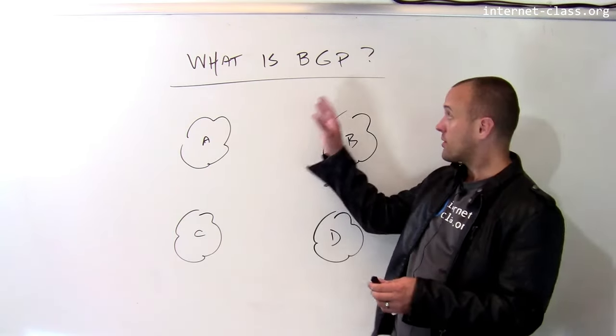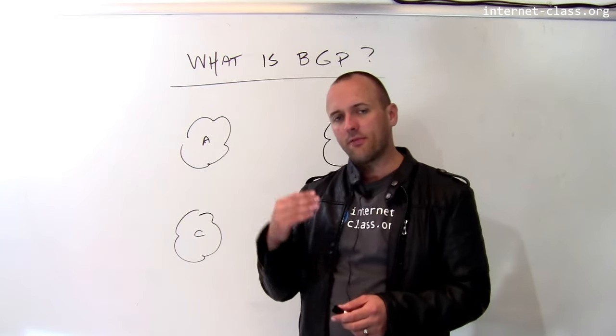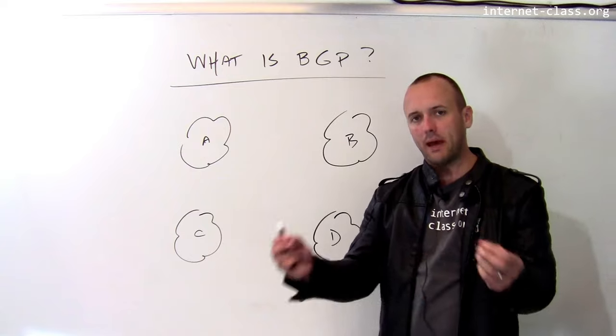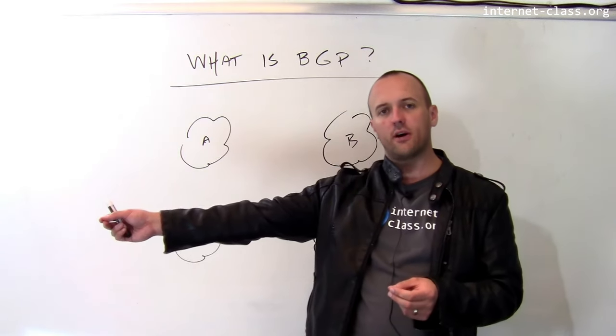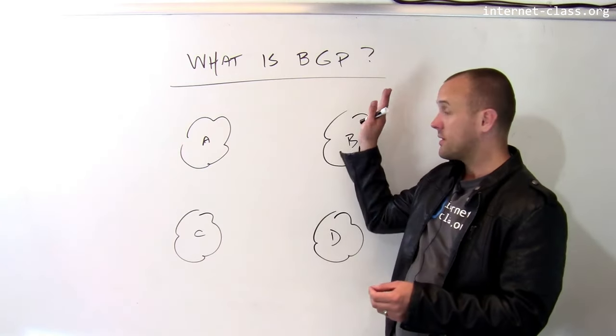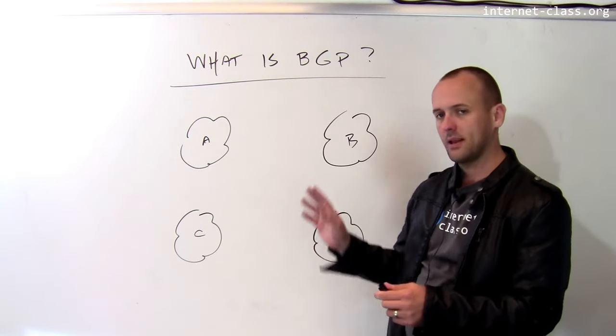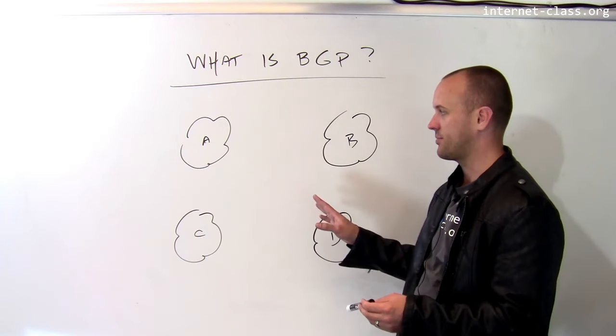The border gateway protocol is the fundamental protocol that these systems use to figure out how to take a packet and transmit it farther on in the internet. So the border gateway protocol is fundamental to the idea of how routing works and let me demonstrate how it works using this simple example.